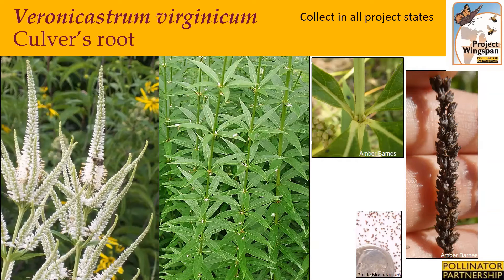Veronicastrum virginicum, or Culver's root, occurs in moist meadows and prairies. It typically reaches three to six feet tall when in bloom. Its lance-shaped leaves are arranged in whorls around the stem, with three to seven leaves per whorl. Dense, slender, eight-inch long spikes or racemes of tiny tube-like white to pale blue flowers open from the top down in the mid to late summer. Collection time is typically in the late summer. Its tiny seeds are produced inside small, woody seed capsules that turn from yellow to brown when ready for harvest. Remove the whole spike and put it into your collection bag to dry.